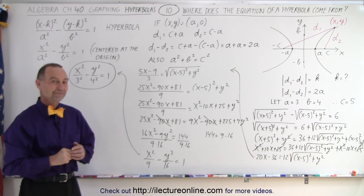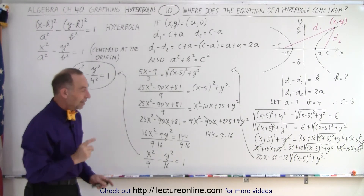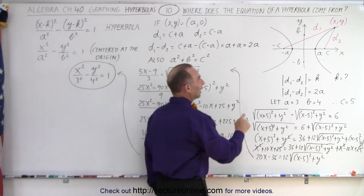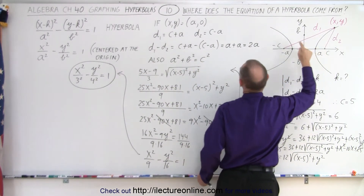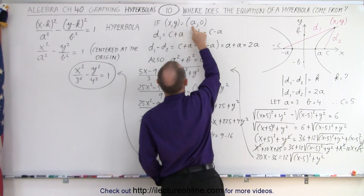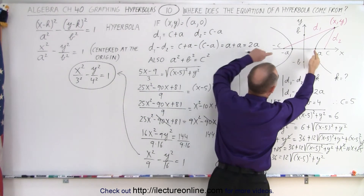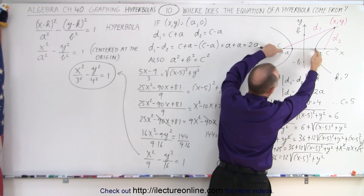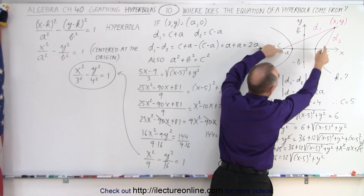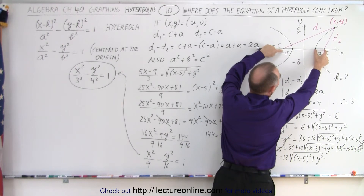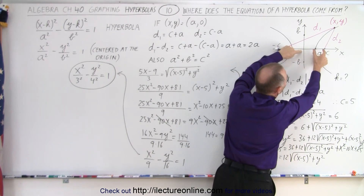How do we get D1 equals C plus A and D2 equals C minus A? If you take the point XY and move it to the location A-zero — so x equals A, y equals 0 — then D1 is the distance from negative C to that point, which is C plus A, and D2 is the distance from C to that point, which is C minus A.